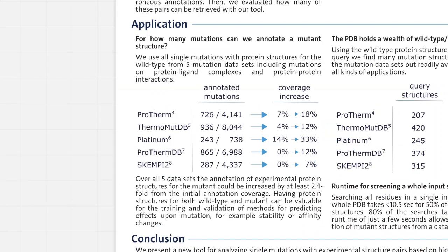In our first application, we wanted to know for how many mutations in common mutation datasets we can annotate mutant structures, since these are rather scarcely annotated. Here we use five mutation datasets including mutations on protein-ligand complexes and protein-protein interfaces. In each case, the annotation coverage of mutant structures could be increased by at least 2.4-fold. Having protein structures for both the wild type and the mutant is valuable for training and validating new methods for predicting effects upon mutation, such as stability or affinity changes.